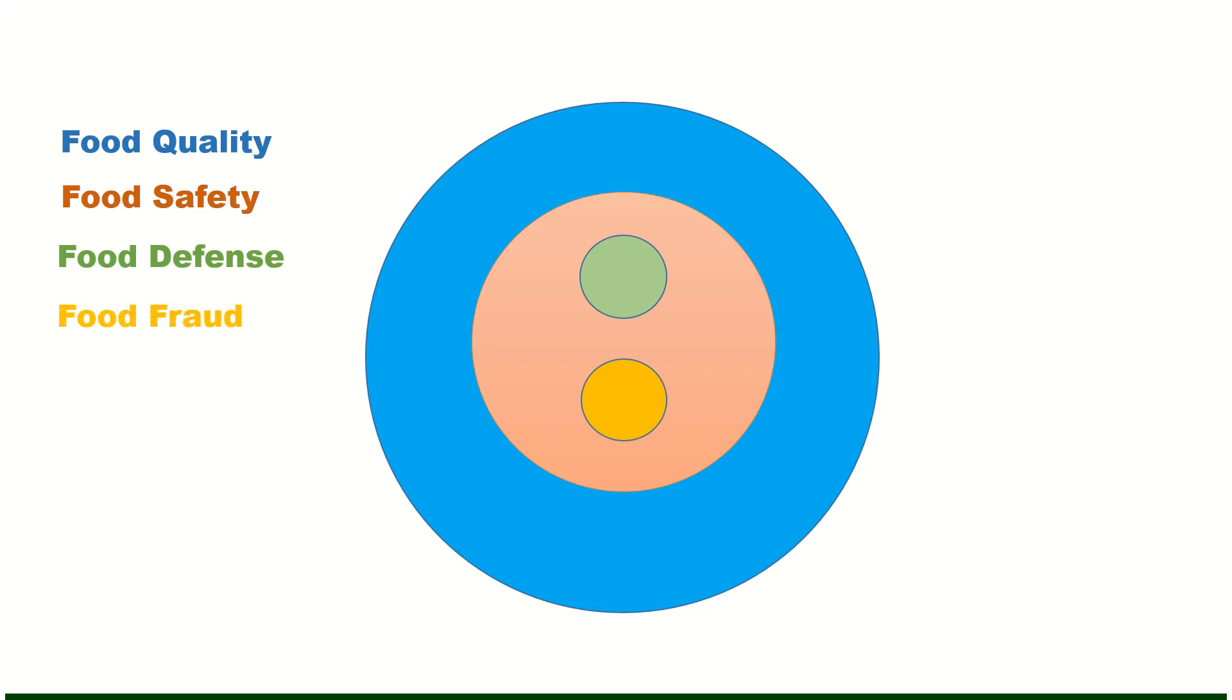Food defense and food fraud are separate circles because these are entirely separate activities and come inside the food safety circle and activities. Now the question is why I made a chart like this? Why food quality includes complete food safety, food defense and food fraud? To understand this we need to go through the definition of these terms.